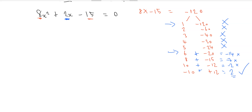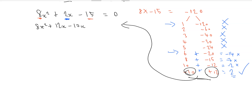Going back to the quadratic equation, we rewrite 8x squared plus 2x minus 15 as 8x squared plus 12x minus 10x minus 15 equals 0, using those factor values. Now we can take out a factor of 4 from the first two terms, and a factor of 5 from the last two terms.